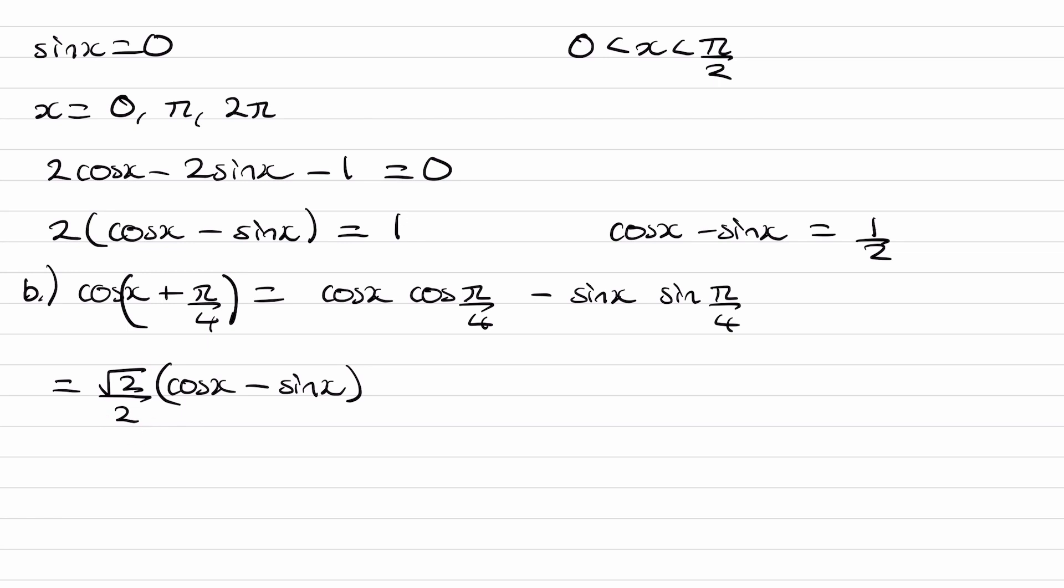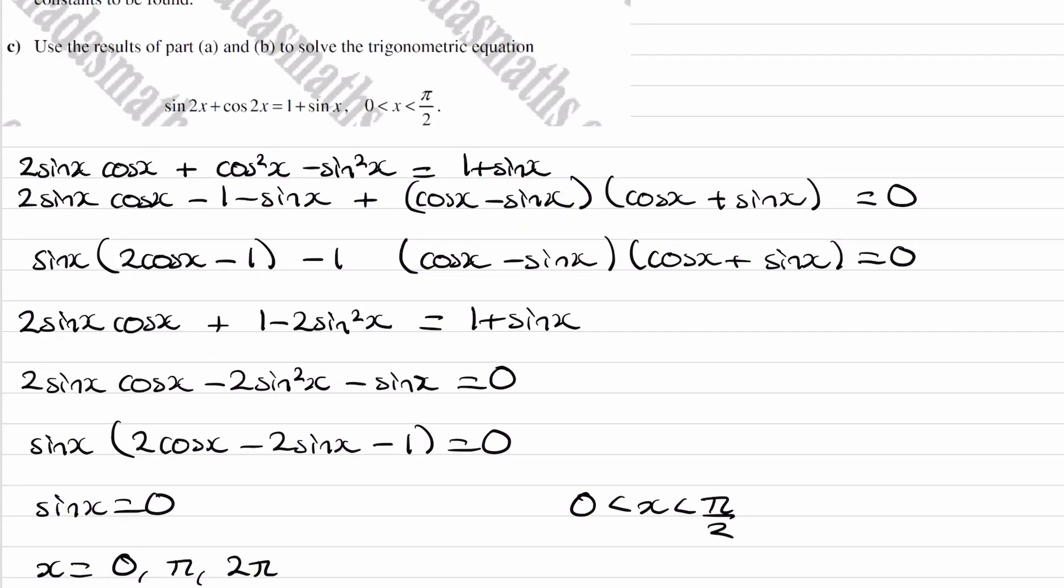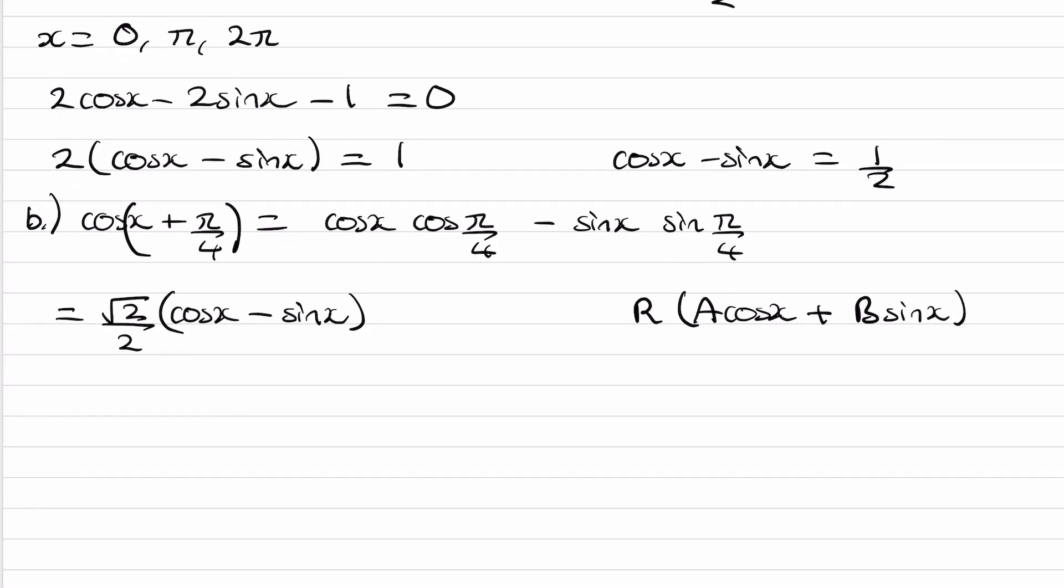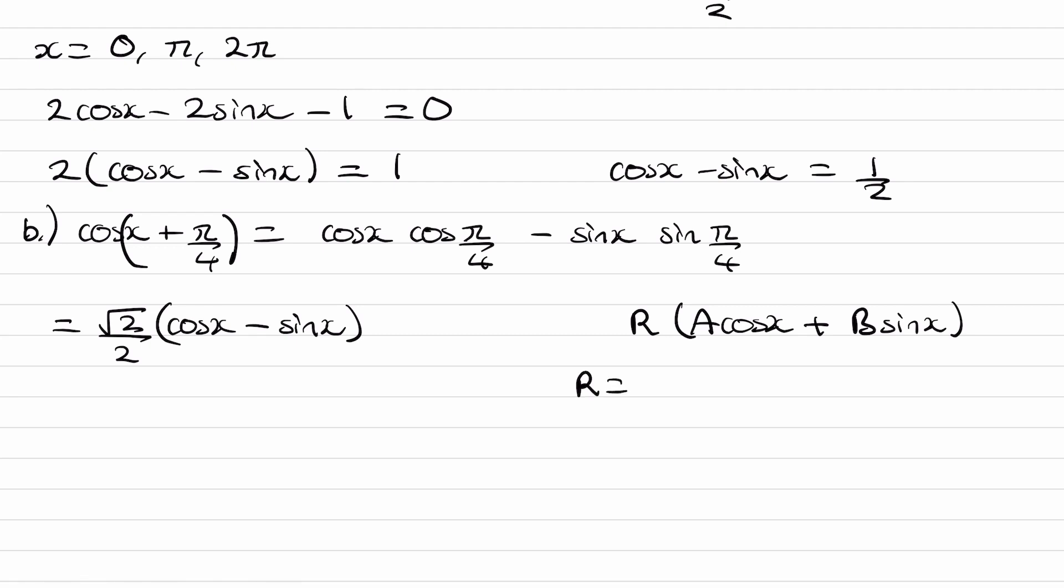Now if we want to write it in the form of r times a cos x plus b sin x, then that would mean that r is equal to √2 over 2, a is 1, and b is equal to minus 1.